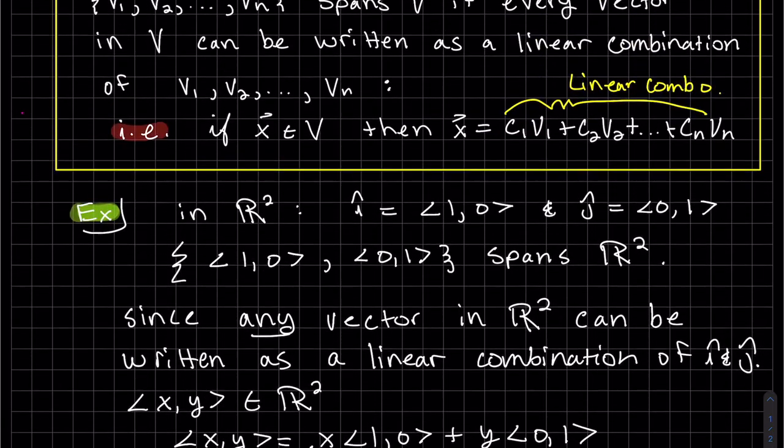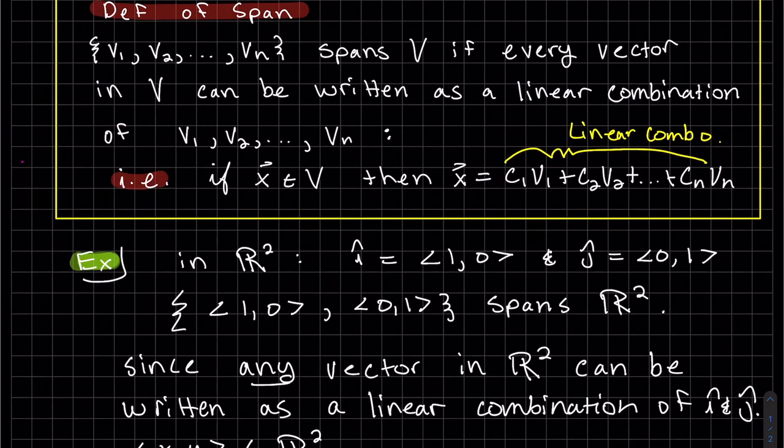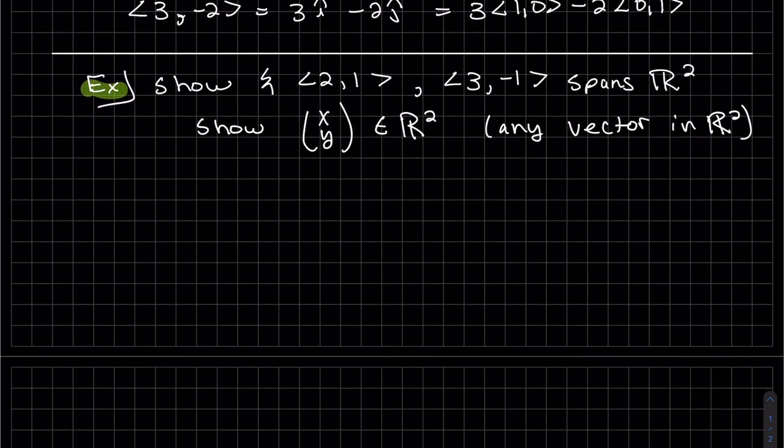We want to show this is any vector in R². Again, the definition is if every vector, any vector in R² for example, can be written as a linear combination of those vectors. So those are any vector, can be written as a linear combination. So we'll do C₁ times the first one. And again, we're utilizing that notation, because we know we're going to be using matrices here. And there we have it.